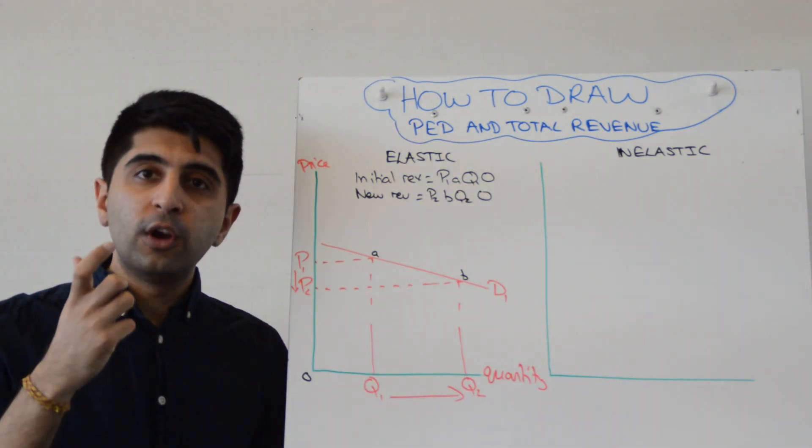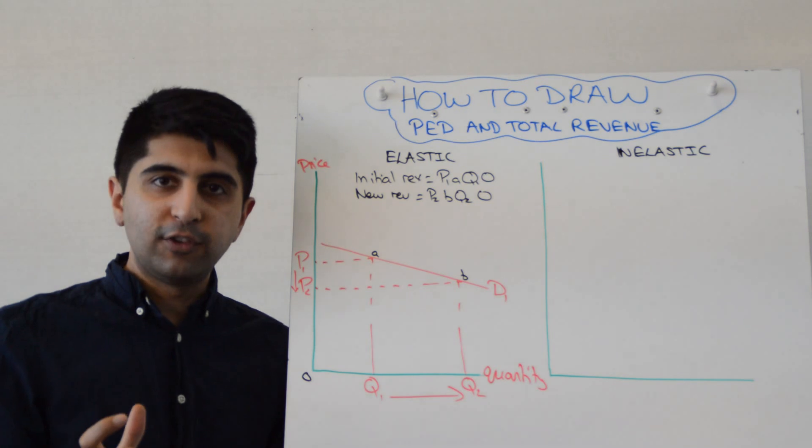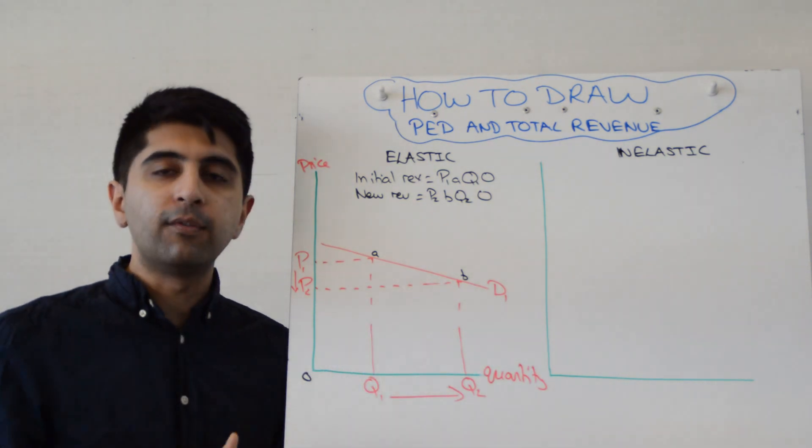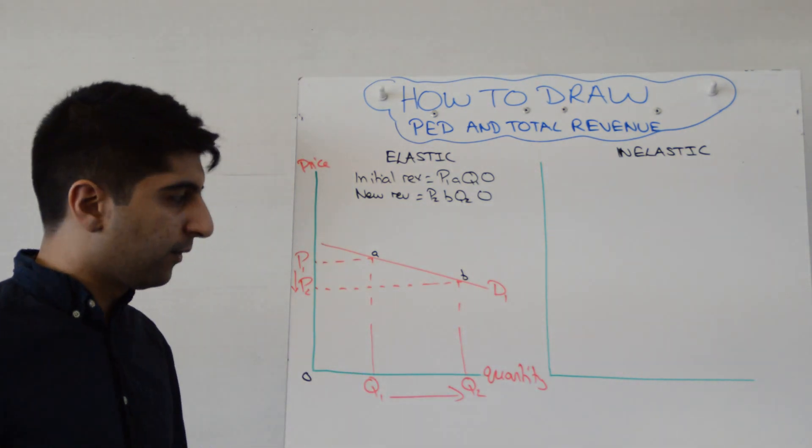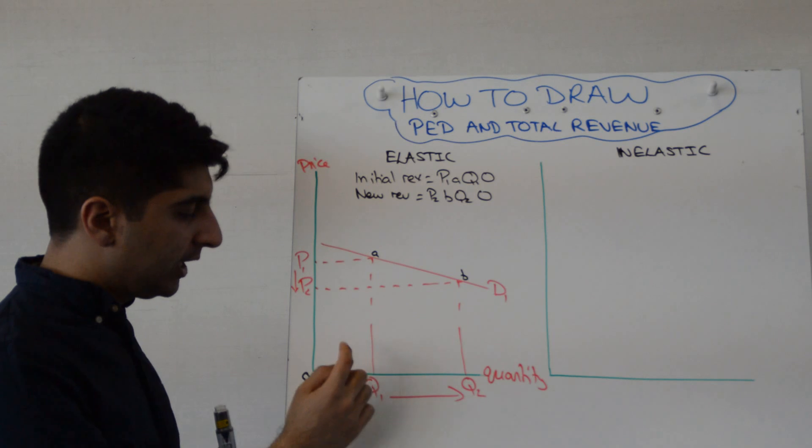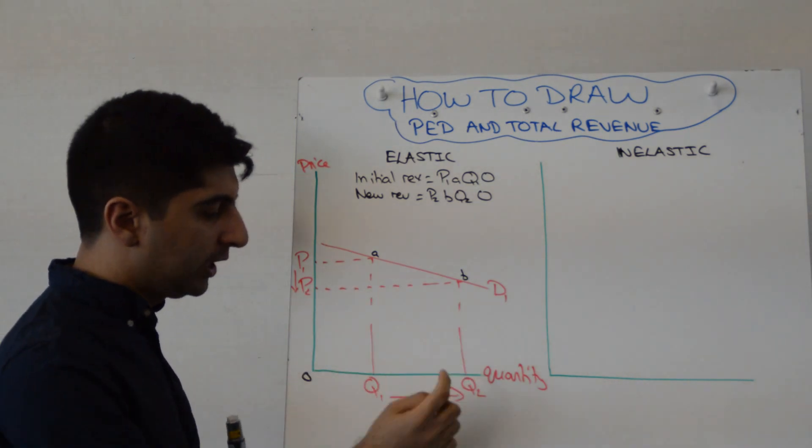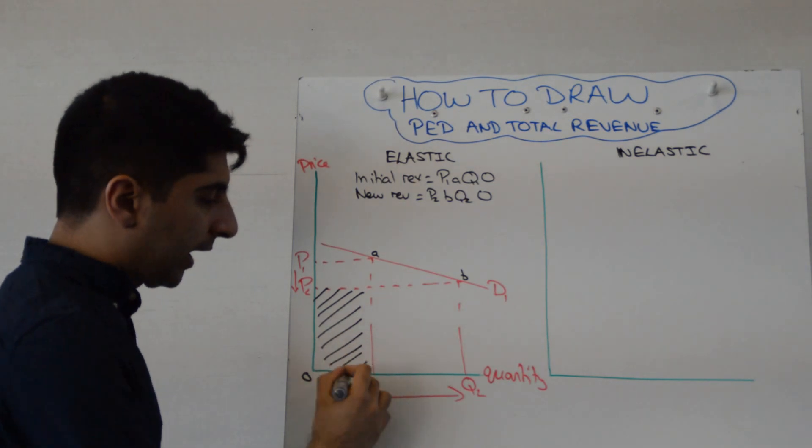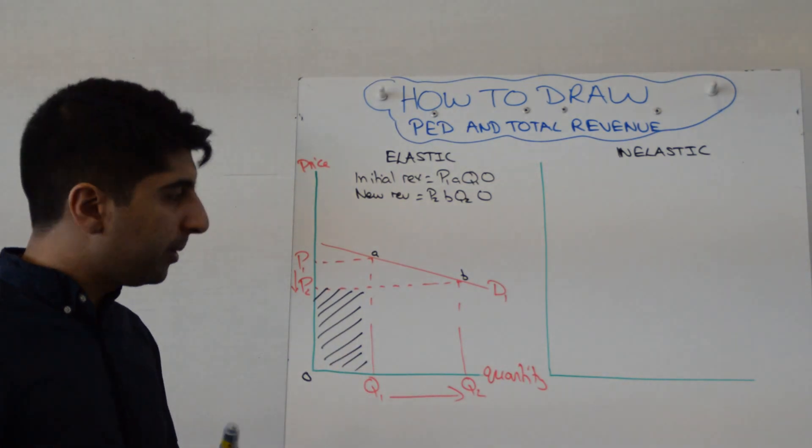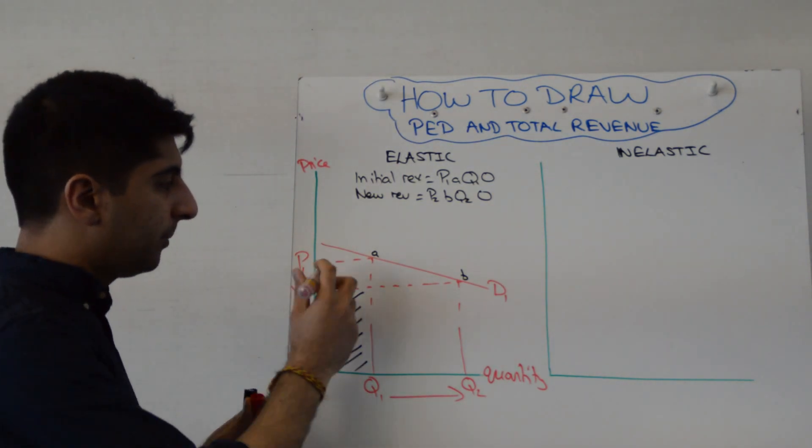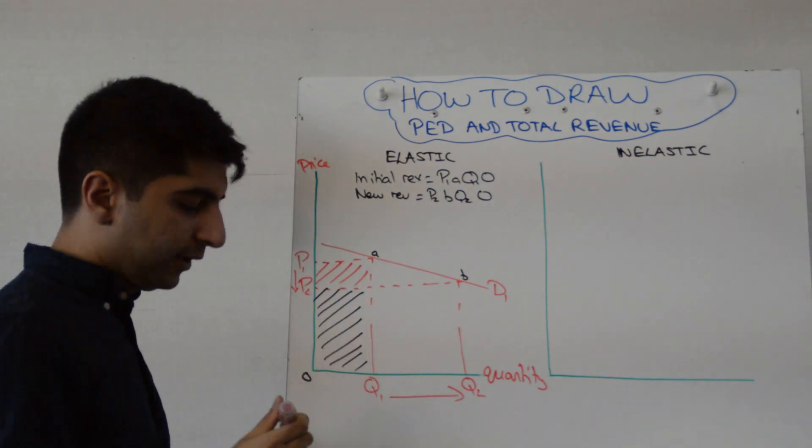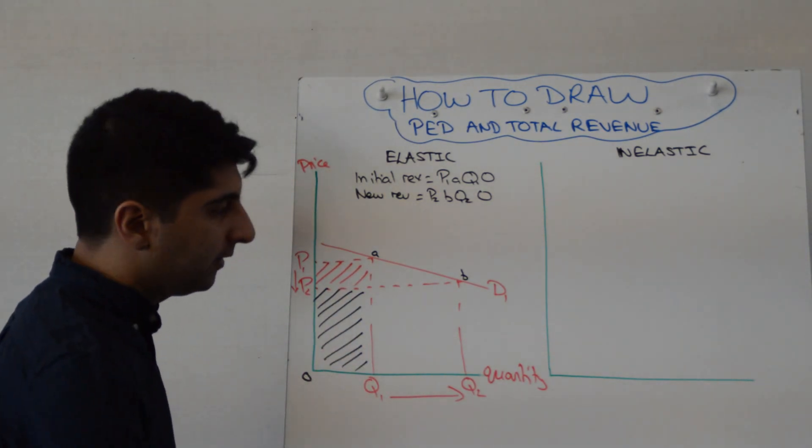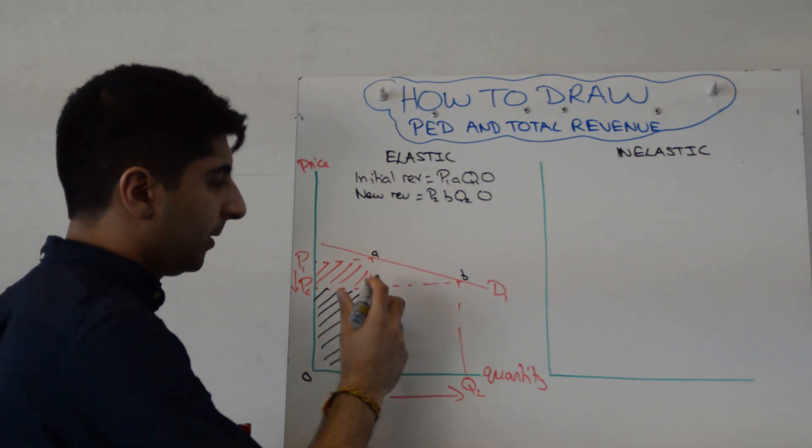Now your job is to show the revenue gains and the revenue losses. You're not going to prove that the gain in revenue is greater than the loss in revenue. So P1, A, Q1, 0 to now P2, B, Q2, 0. Right, this little black bit has remained in terms of revenue. What's been lost is this red box. That's the loss. Whereas the gain is this green box.